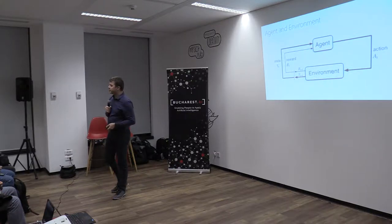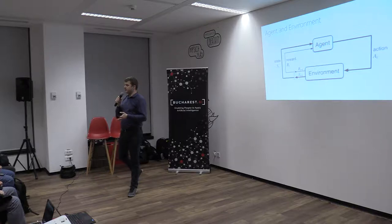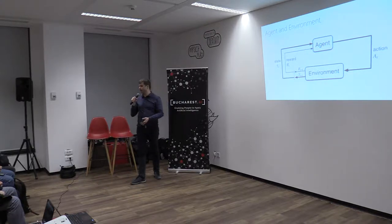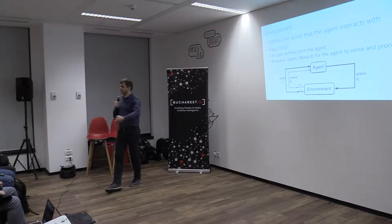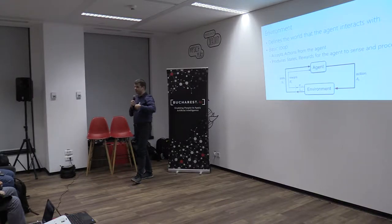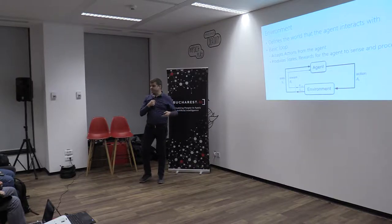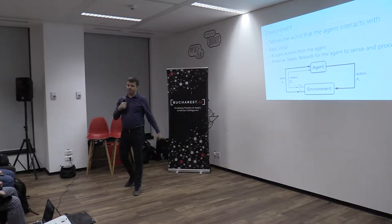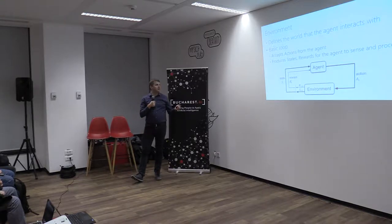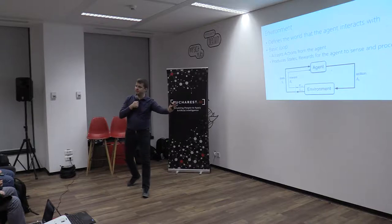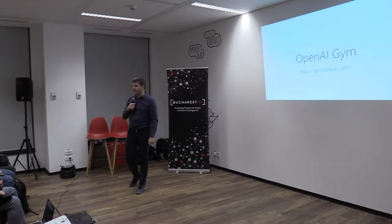To formalize the problem of reinforcement learning a little bit: reinforcement learning basically happens during a sequence of interactions between two actors — an agent and an environment. The environment defines the world that the agent is living in, and is able to accept an action from the agent. Then it computes the laws of that particular world and returns to the agent a new state and a reward.